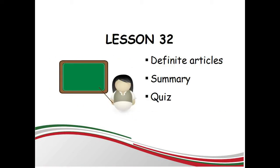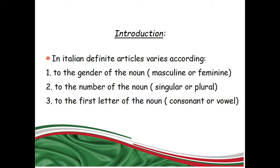In today's lesson you will learn the definite article. Let's start. The definite article is translated in English as 'the'. In Italian, the definite article varies according to the gender of the noun (masculine or feminine), the number of the noun (singular or plural), and also to the first letter of the noun (consonant or vowel).